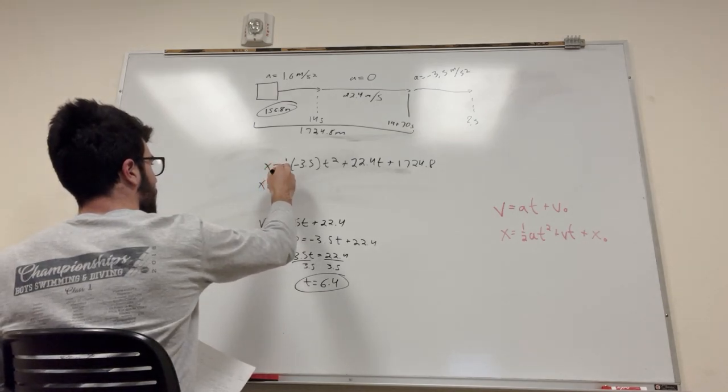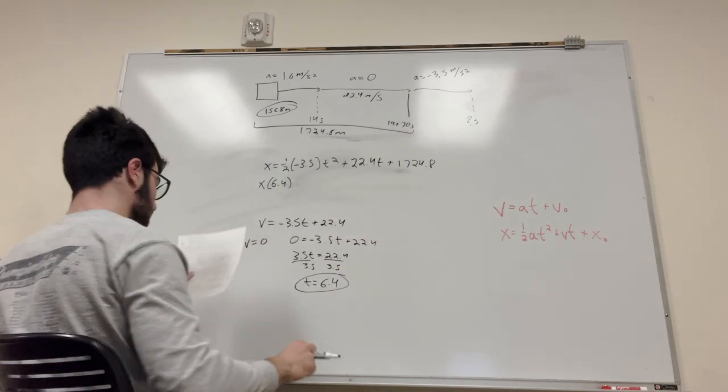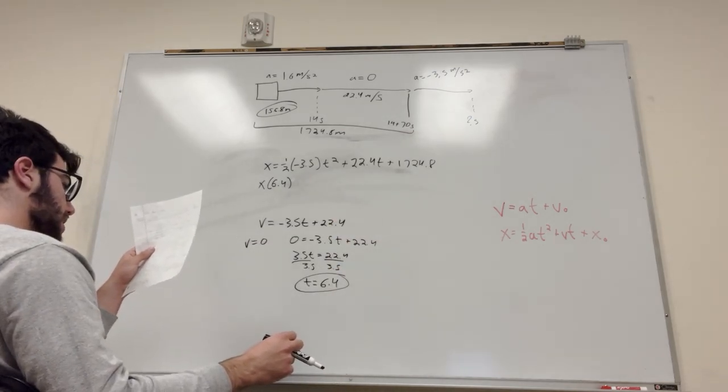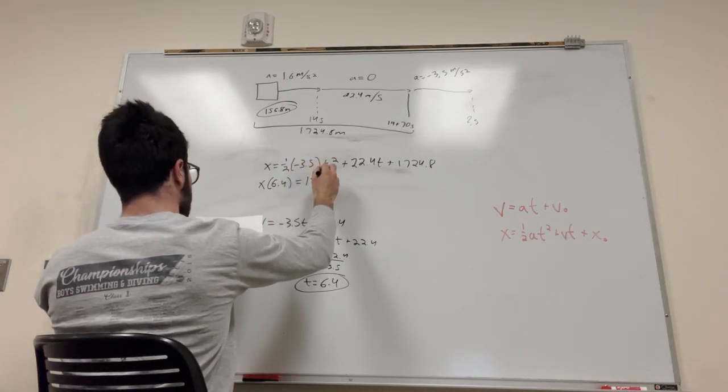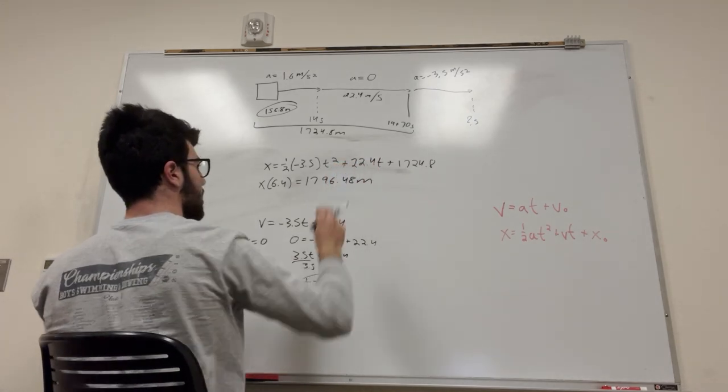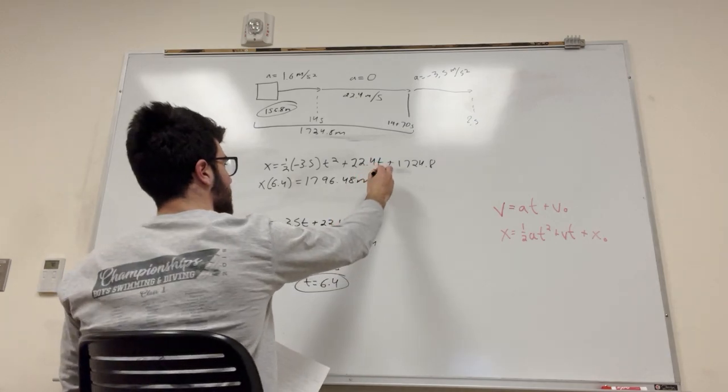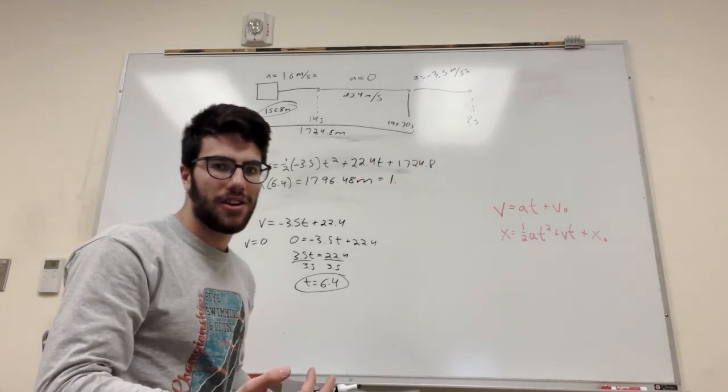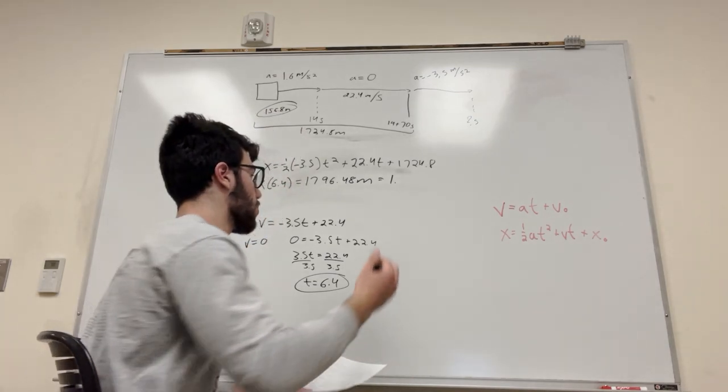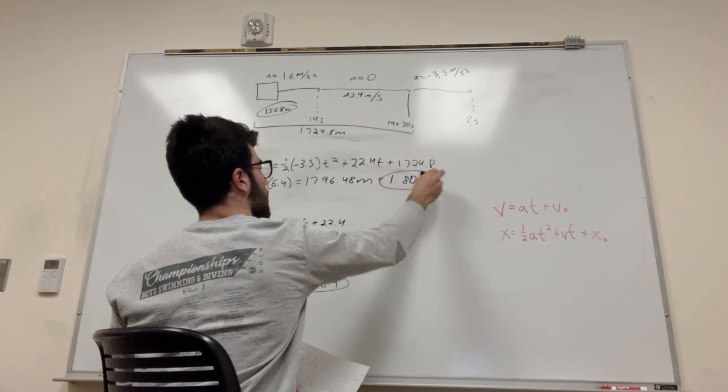x of 6.4. Once again, this is just saying you're plugging in 6.4 for all these t values here. And that is going to give you, let's see, equal to 1796.48 meters. And it's asking for in kilometers. So, this is pretty much equal to 1.79. But I think if you're rounding to sig figs on this, it went to 1.80 kilometers. And there you go.